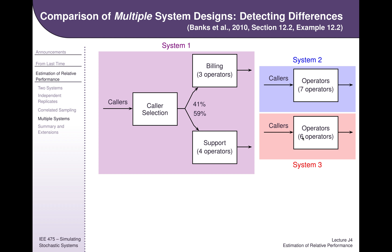So now you want to test whether cross-training makes a difference, and whether the number of operators makes a difference, and which one is better. What we mean by better might be complicated. It might be that we notice a significant improvement in performance when we go to seven operators, but when we go to six operators, there's no difference in performance between system three and system one. But system three is much cheaper to implement because we only have six operators. So in some cases, the performance was better with system two, but the cost was better with system three.